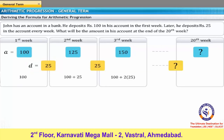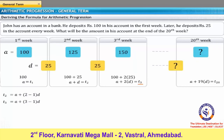As you can see from the table, the general form of AP is A, A plus D, A plus 2D, and so on. If you denote the first term A as T1, the second term A plus D as T2, the third term A plus 2D as T3, and so on, then T2 equals A plus (2 minus 1) multiplied by D, and T3 equals A plus (3 minus 1) multiplied by D. You can generalize this to get the 20th term, which is A plus (20 minus 1) multiplied by D.